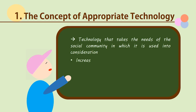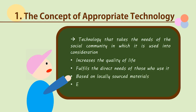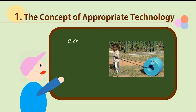Appropriate Technology increases the quality of life and fulfills the direct needs of those who use it. Moreover, it is often based on locally sourced materials, which makes it cost-friendly. Last but not least, expertise is not necessary to use this technology. Now, let's look at some of the most well-known examples of Appropriate Technology.